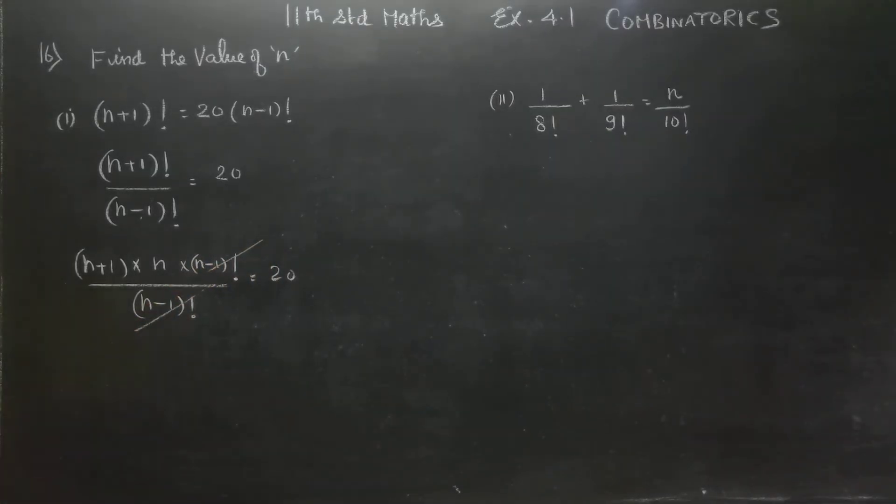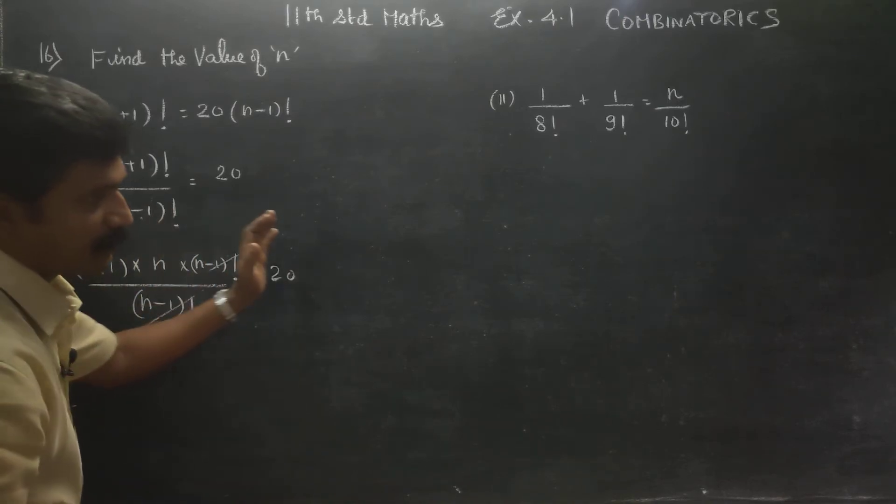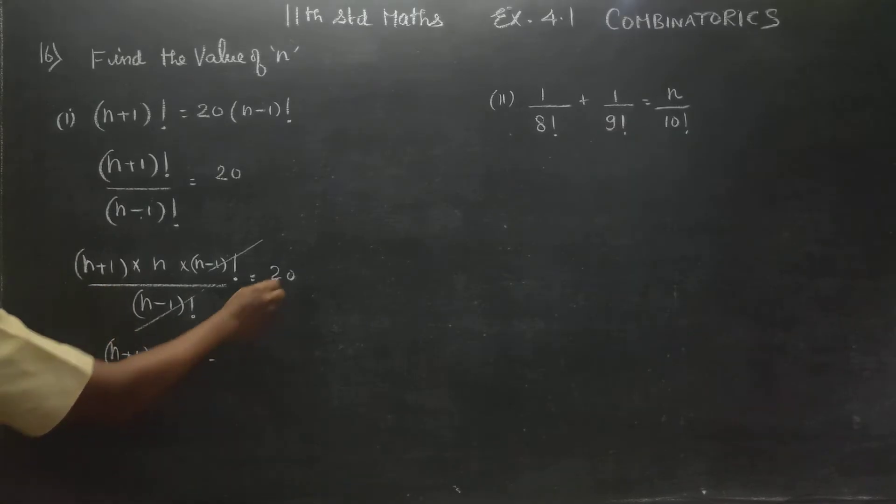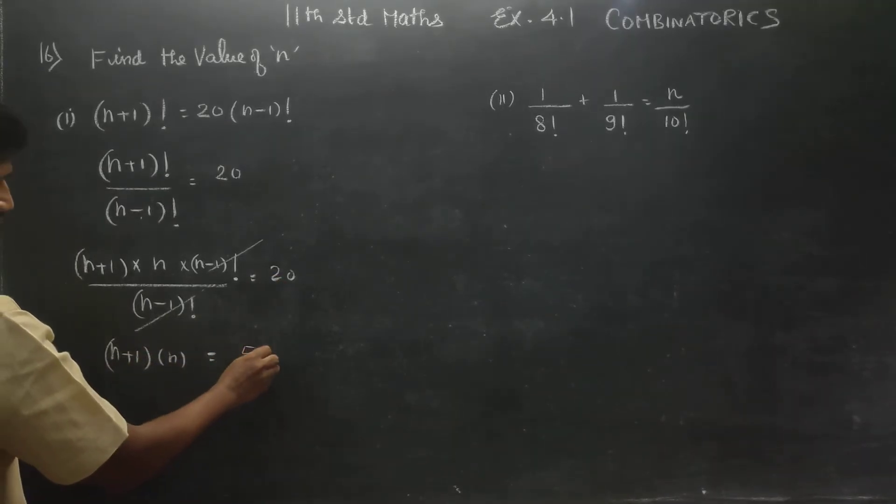Now n minus 1 factorial, n minus 1 factorial cancel. If you start a number, you can get n minus 1. If you stop, you will cancel. Then n minus 1 into n is equal to 20 can be written as 5 into 4.